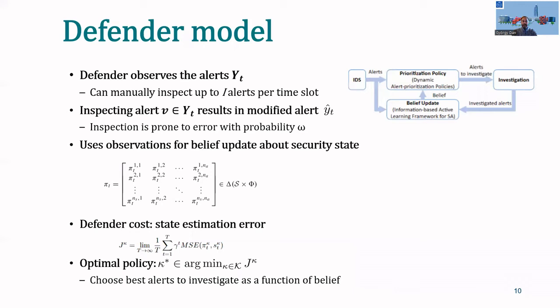Our defender model assumes that the defender can observe the alerts and can manually inspect up to a certain number of alerts every time slot. Now, if the defender decides to inspect a particular alert, then the investigation will lead to a modified alert, but this investigation may actually be bogus. For example, you may investigate a true alert, that is, an alert that was raised due to ethical activity, and you may conclude that it was a false alert. Or vice versa, you may investigate a false alert, and you may conclude that it's actually a real alert.